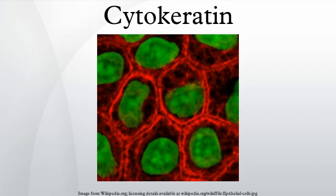Two dimers of cytokeratin group into a keratin tetramer by anti-parallel binding. This cytokeratin tetramer is considered to be the main building block of the cytokeratin chain. By head-to-tail linking of the cytokeratin tetramers, the protofilaments are originated, which in turn intertwine in pairs to form protofibrils. Four protofibrils give place to one cytokeratin filament.